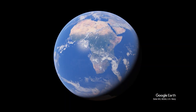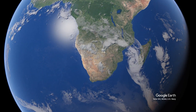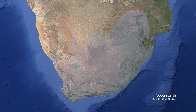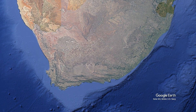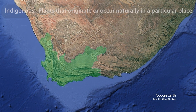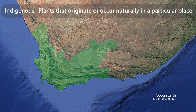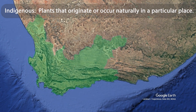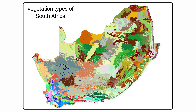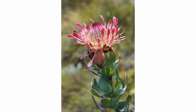Understanding the significance of local indigenous plants begins with knowing what is native to South Africa and more specifically to our various local environments. The Oxford Dictionary defines indigenous as plants that originate or occur naturally in a particular place. Did you know that South Africa boasts around 20,000 indigenous plant species? That's an astonishing 10 percent of all plant species found on earth.